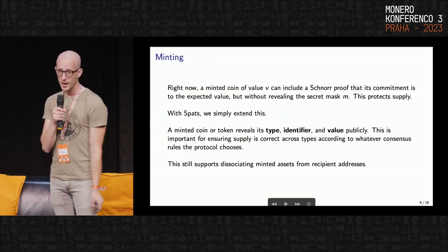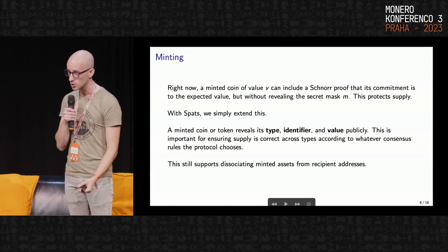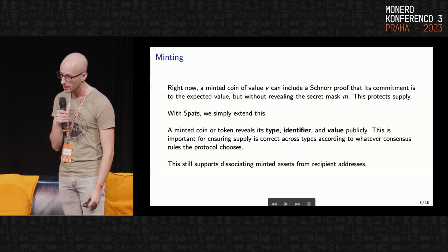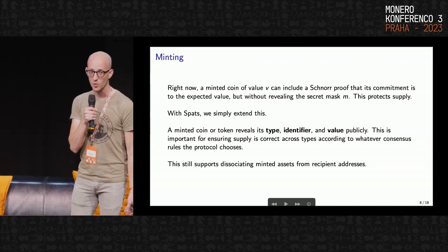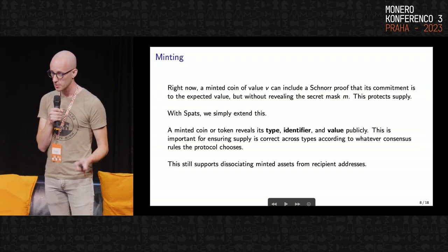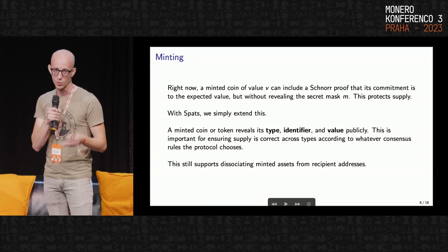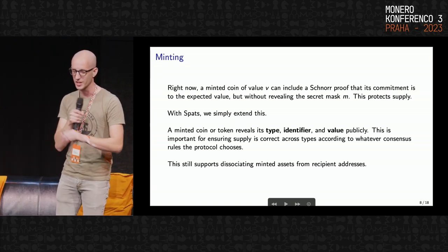How do you mint these things? Right now in protocols like Monero, we have coinbase transactions with defined values that are allowed to be minted at certain times. They reveal the value so the network can verify supply is changing at a well-defined rate. The minted coin of value V can include a Schnorr proof that its commitment is to the expected value defined by the protocol rules, without necessarily revealing the secret mask M — that's what protects supply. With SPATS, you basically extend this: during these mint operations you need to know whether a new asset type or identifier being minted meets whatever consensus rules you decide. For a minted coin or token, you reveal the type, the identifier, and the value publicly so the network can verify it, ensuring correct supply across all types according to your protocol rules. This still supports dissociating assets from addresses, so stealth addressing works exactly the same way.